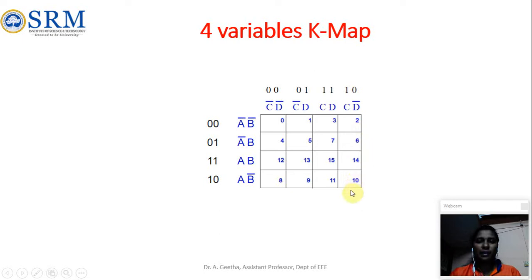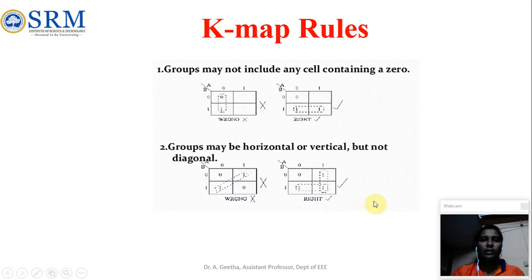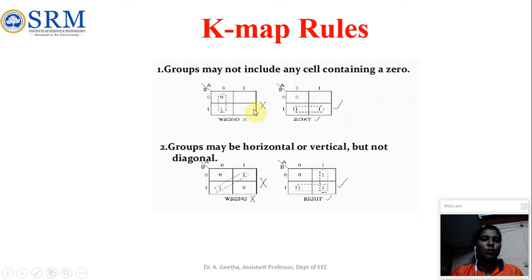This is the general format for a 4-variable K-map. There are certain rules to be followed in K-map. Rule number 1: Groups may not include any cells containing a 0. Since this session deals with the SOP form, the grouping cannot include 0s — only grouping of 1s is possible. For example, grouping 0 and 1 together is not the correct methodology; only grouping of 1s is possible in K-map.